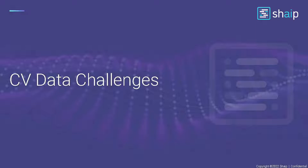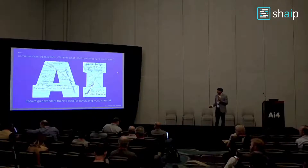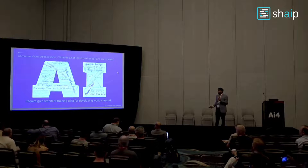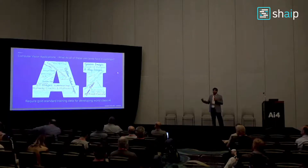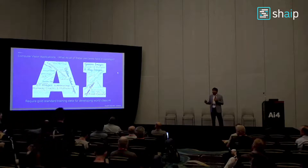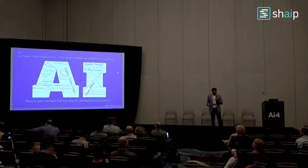There are many computer vision data challenges. There are so many use cases people are trying to solve — generative images, home security videos, barcodes, drone videos, food cuisines, and very unique ones like runway cracks, potholes, stain identification on cloth, and fridge images. One common thread connecting all these use cases is that all of them require good, standard training data. The AI is only as good as the quality of the training data.